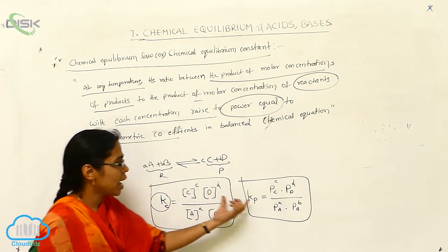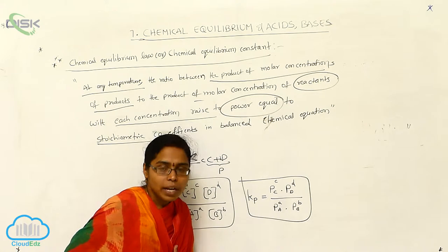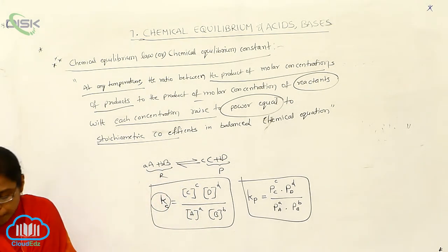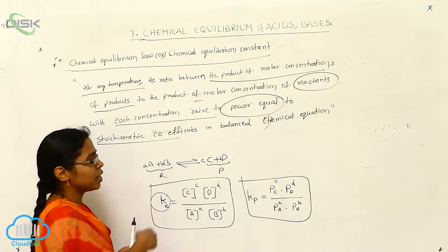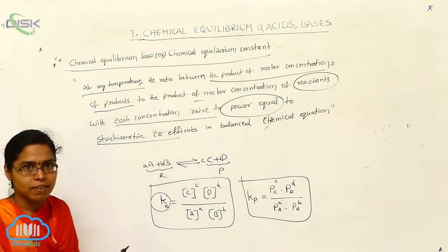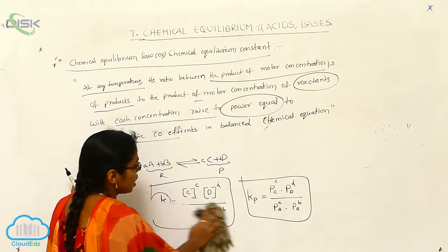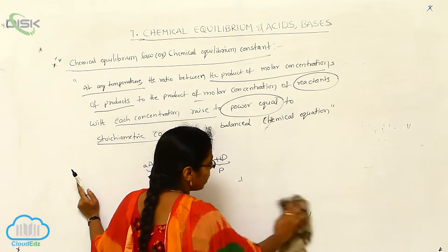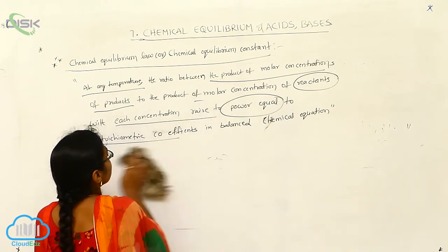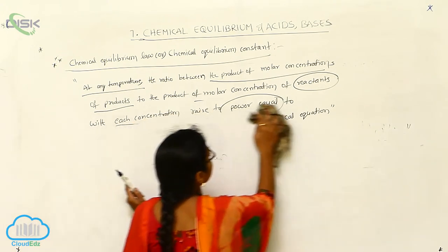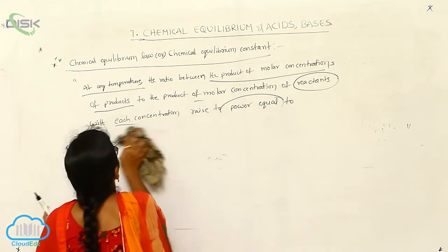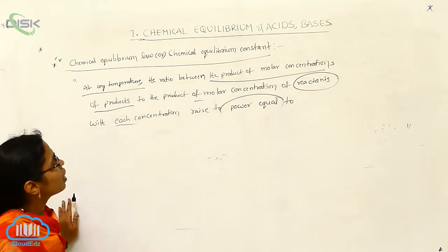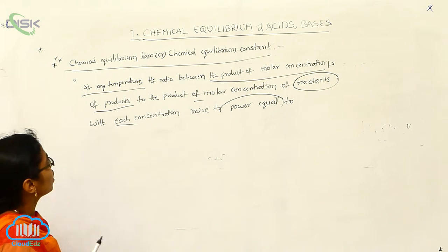So we have Kc and Kp. Now, one more important topic is the relationship between Kp and Kc. This relationship is important for exam questions. We can restate the chemical equilibrium law: at any temperature, the ratio between the product of molar concentrations of products to the product of molar concentrations of reactants is called the chemical equilibrium constant.